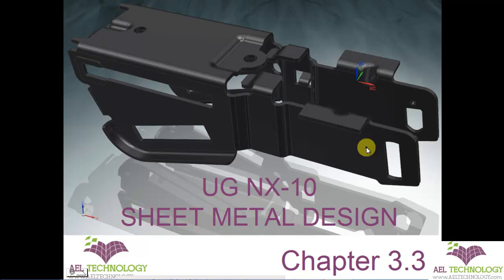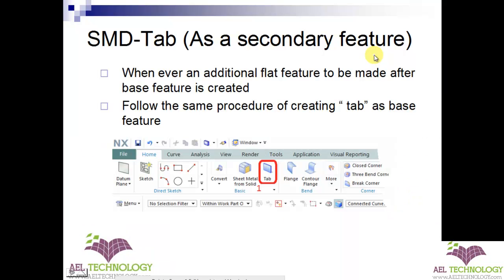Hello, welcome to a new session of UGN NX10 sheet metal design. We are in chapter 3.3. In this chapter we will be explaining about how to create a tab as a secondary feature.